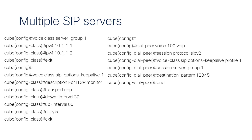Beginning in the configuration mode of the router. First, configure a server group for monitoring. For instance, servers with IP addresses 10.1.1.1 and 10.1.1.2.